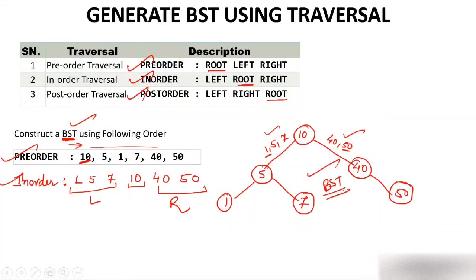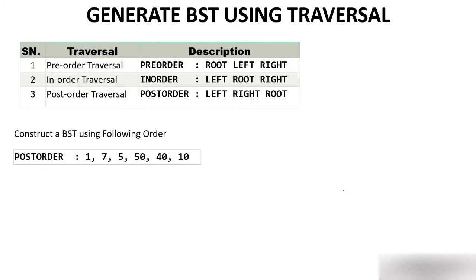For elements 40 and 50 on the right side, check in the pre-order which comes first - 40 comes first. So 40 takes this position. And 50 is to the right of 40 in the in-order, so 50 comes to the right of 40. So this is the required BST. If you are asked to construct a BST and only one order is given - pre-order or post-order - do not panic. It is a very easy question. Now let's move to the second question where post-order is given instead of pre-order.